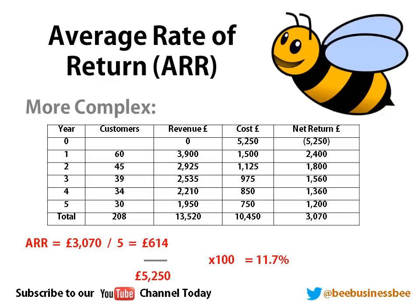I've totalled my net return column. I know that I've got £3,070 in net return — the positive figure — after adding all my numbers up and taking away the initial cost. Remember, brackets indicate a negative. I've divided by five years — notice I use five years because I don't count year zero, as that's the initial investment. That's a common mistake people make. Year zero is always the initial investment. That gives me £614 on average each year. Divided by my initial cost of £5,250, times 100, I get 11.7%.